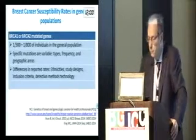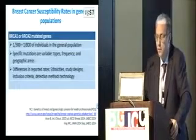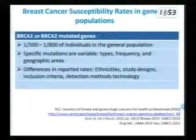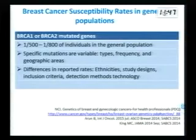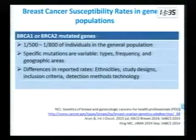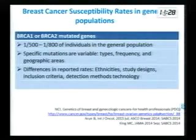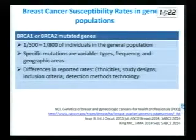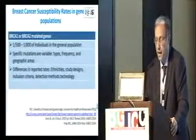I will now go over the rates of BRCA1 and 2 in general populations and in breast cancer patients worldwide, and also what we know about BRCA mutations in Arab countries. In general, about 1 in 500 individuals in the general population may be a BRCA1 or 2 gene carrier. Specific mutations are variable by type, frequency, ethnicity, and geographic area. Differences in reported rates are related to study designs, inclusion criteria, detection methods used, and ethnic backgrounds.